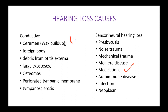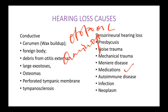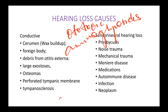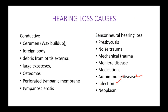Medications: any kind of ototoxic medications cause sensorineural hearing loss, especially aminoglycosides. These include gentamicin and streptomycin — all the '-micin' drugs are ototoxic. You can remember this as 'mice in the ear,' since all aminoglycosides end in '-mycin' or '-micin,' and they cause ototoxicity.